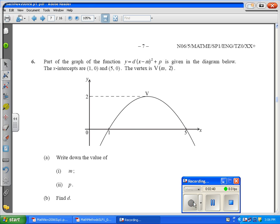Okay, now I want to solve part B, which tells me to find D in my equation, which is right here. All the variables here, I have points given, and I have the values of M and P, so I can just substitute them into the equation, which gives me Y = D(X - 3)² + 2.